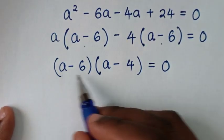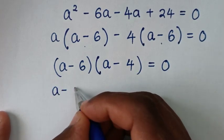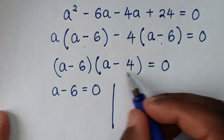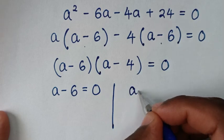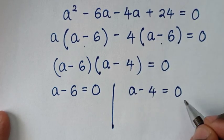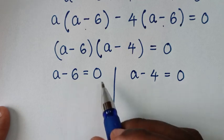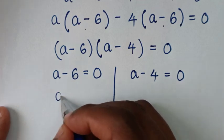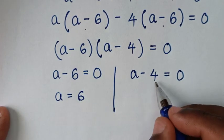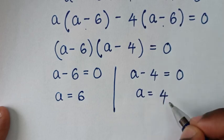From here we'll have two solutions. The first solution: a minus 6 is equal to 0, so taking negative 6 to the other side gives a is equal to 6. And from the second factor, taking negative 4 to the other side gives a is equal to 4.